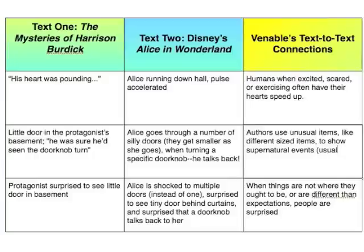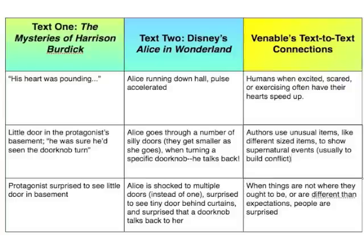Authors use unusual sized items to signal conflict. So we've made three connections here, and something you'll notice about your connections is that — because you're pulling from multiple texts — these connections are actually going to be fairly universal ideas. Connection one: a human's heart speeds up when they're excited, scared, or sometimes exercising. Connection two: authors use different, unusual sized items to show supernatural events and to build conflict. Connection three: when things are not as they should be or different than what we expect, people are surprised.